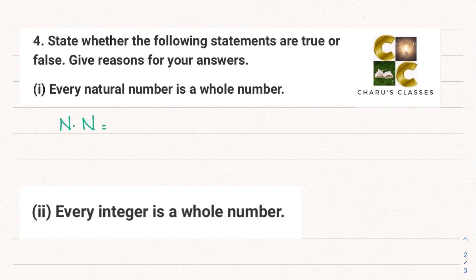Natural numbers are numbers that we call counting numbers, that is the numbers starting from 1: 1, 2, 3, 4 till infinity. These are all the natural numbers.